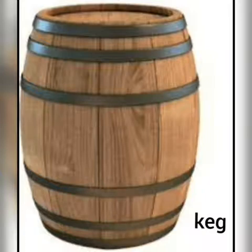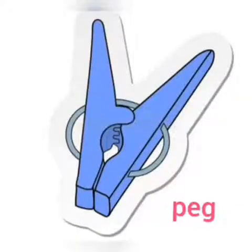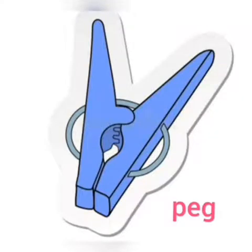K-Egg-Keg. Now we see a leg in this picture. We have two legs. Now how do we read leg? L-Egg-Leg. Can you see peg in this picture? It is a short pin used to hang things. P-Egg-Peg.